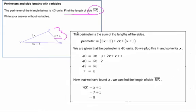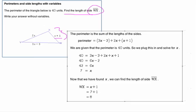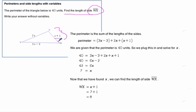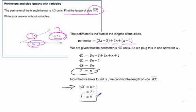Okay, so you should have worked through it this way. Adding up the three sides, we've got 3x minus 3, 2x, and x plus 1. Solving that, we get x equals 7, but that's not the answer. Remember, WX is x plus 1, so our final answer is 8.